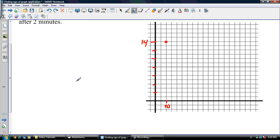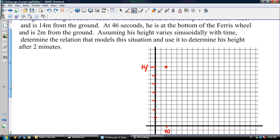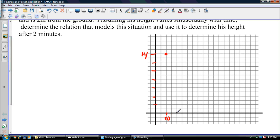And then at 46 seconds, he is at the bottom of the Ferris wheel, and that's 2 meters from the ground. So 20, 30, 40, and 50. So 46 would be right here, and 2 meters right here. There's my minimum.